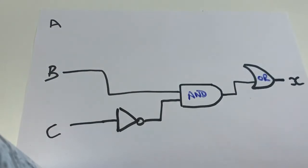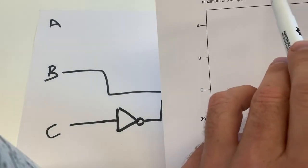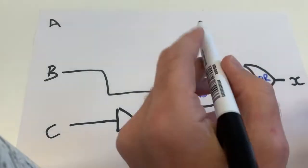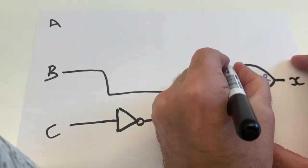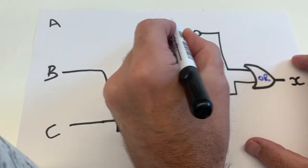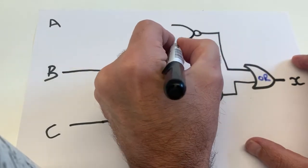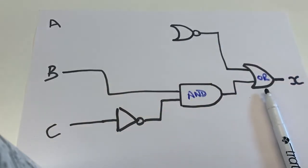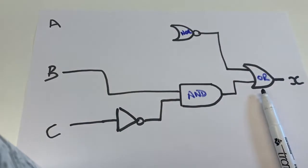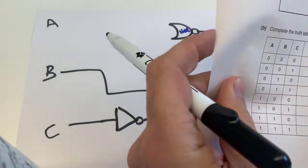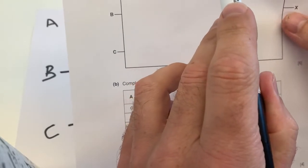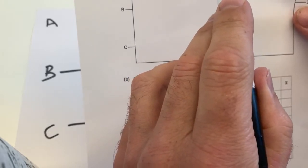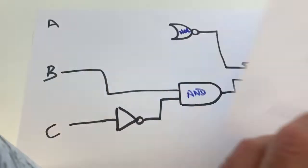Now the tricky bit - working backwards: NOR A is not one. Up here going into the OR gate, I'm going to put a NOR gate. Remember the NOR and NAND gates have a little circle on them. So that gate there is my NOR gate. What's going into the NOR gate: A is not one, and A is one NAND C is one.